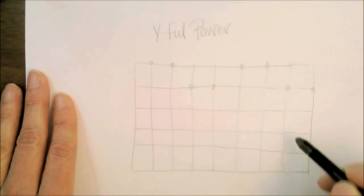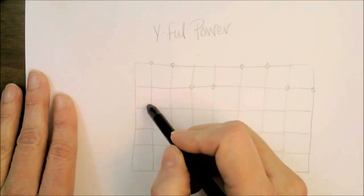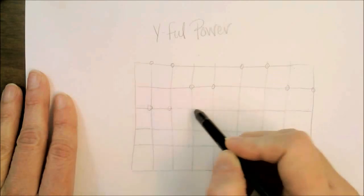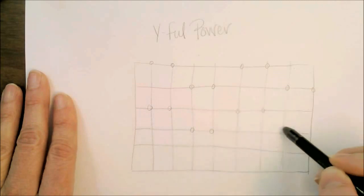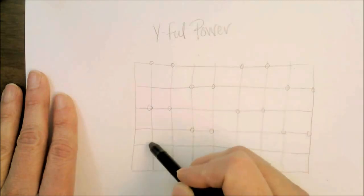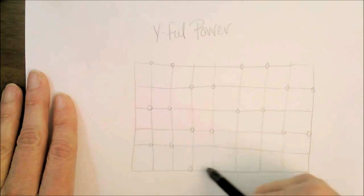We do two dots here and then repeat the same process. Two dots, down two dots, up two dots, down two dots, two dots, down two dots, up two dots, down two dots.